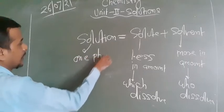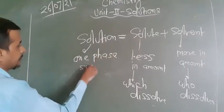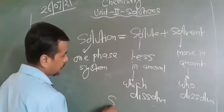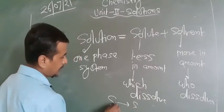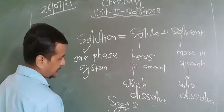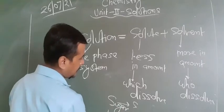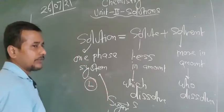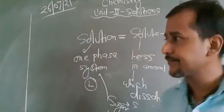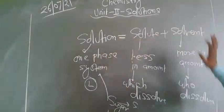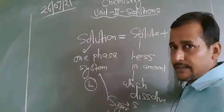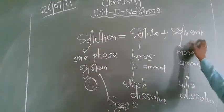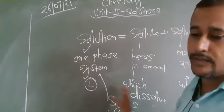That's why a solution is also known as a one-phase system. For example, sugar is solid and water is liquid, but the solution formed is always in the liquid state. So you can say the state of the solution basically belongs to the state of the solvent: if the solvent is liquid, the solution is liquid; if solid, solution is solid; if gas, solution is gas. So solution is always a one-phase system.